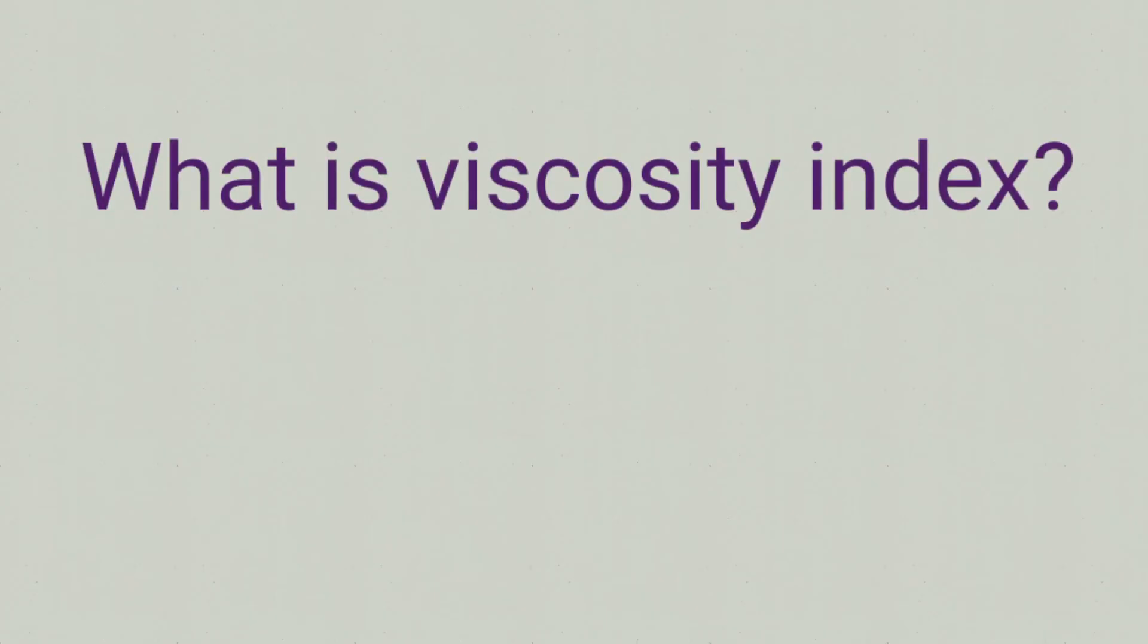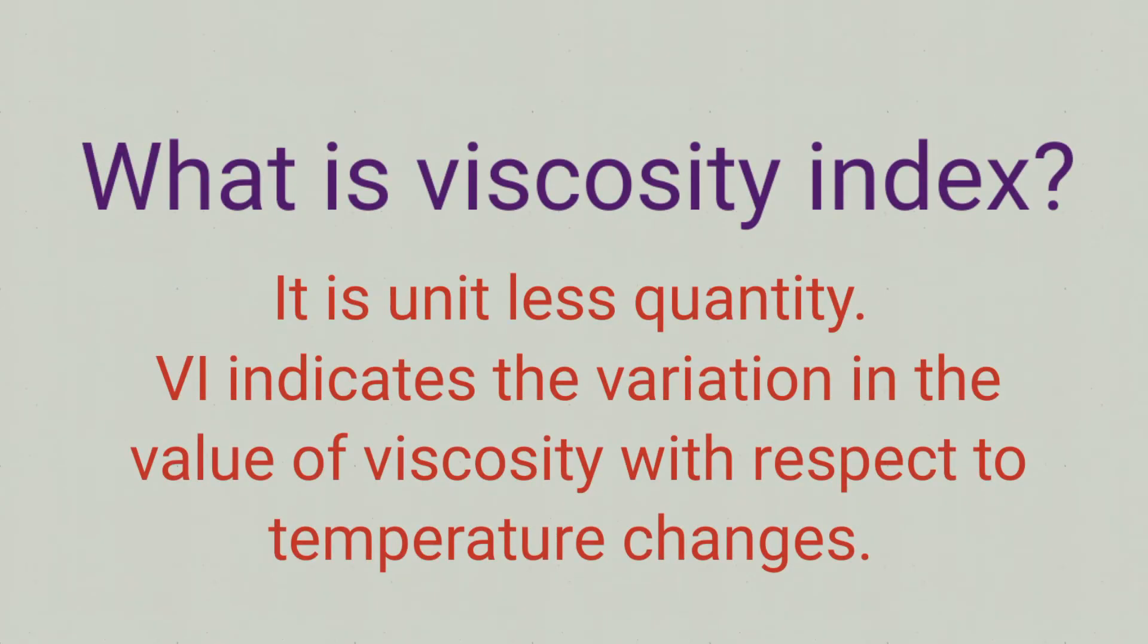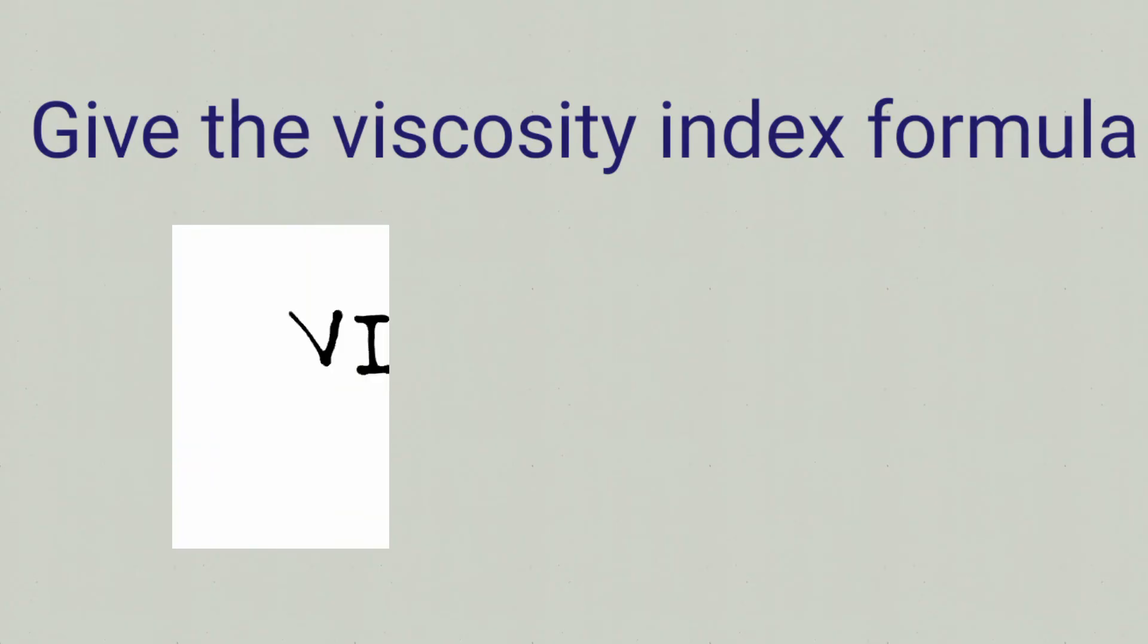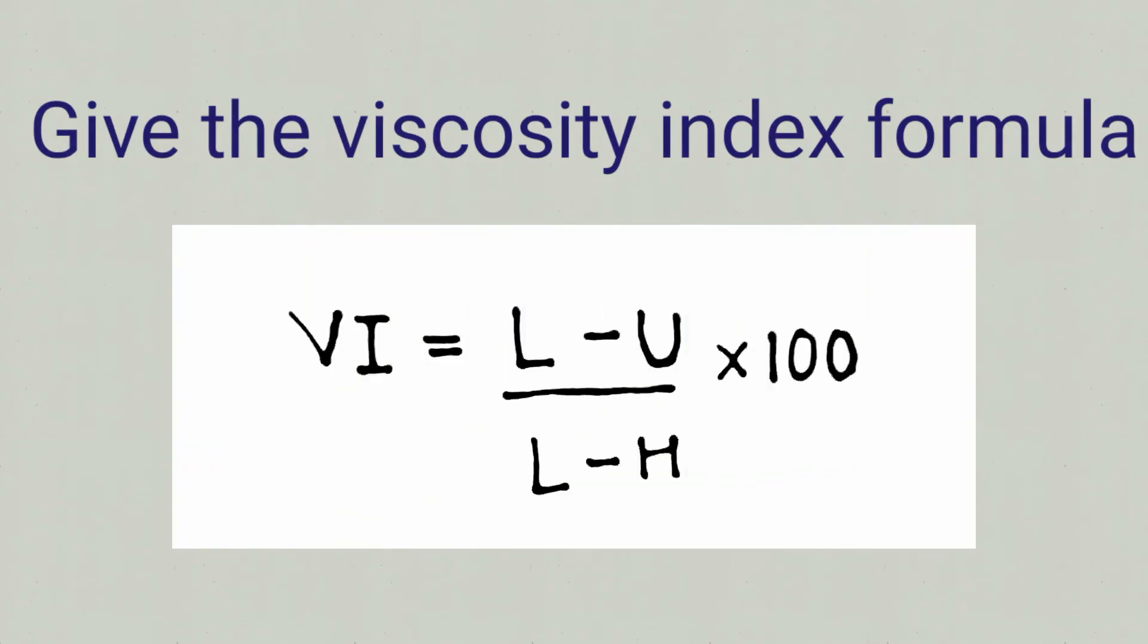What is viscosity index? It is a unitless quantity, and it indicates the variation in the value of viscosity with respect to the changes in temperature. The viscosity index formula is represented as VI and VI equals (L minus U) upon (L minus H) into 100.